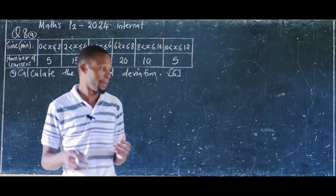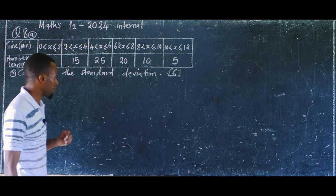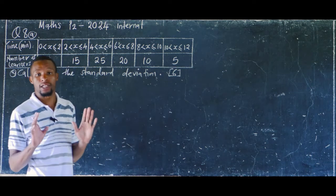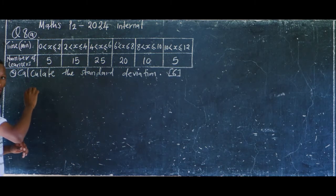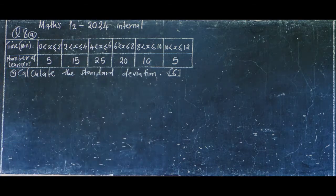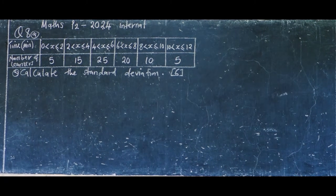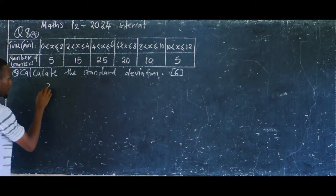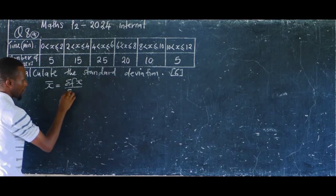The standard deviation comes in Paper 2. The method we are going to use is: first of all, find the mean. We are not going to be drawing any table. For finding the mean, we are going to use the formula: x-bar equals summation fx over summation f.